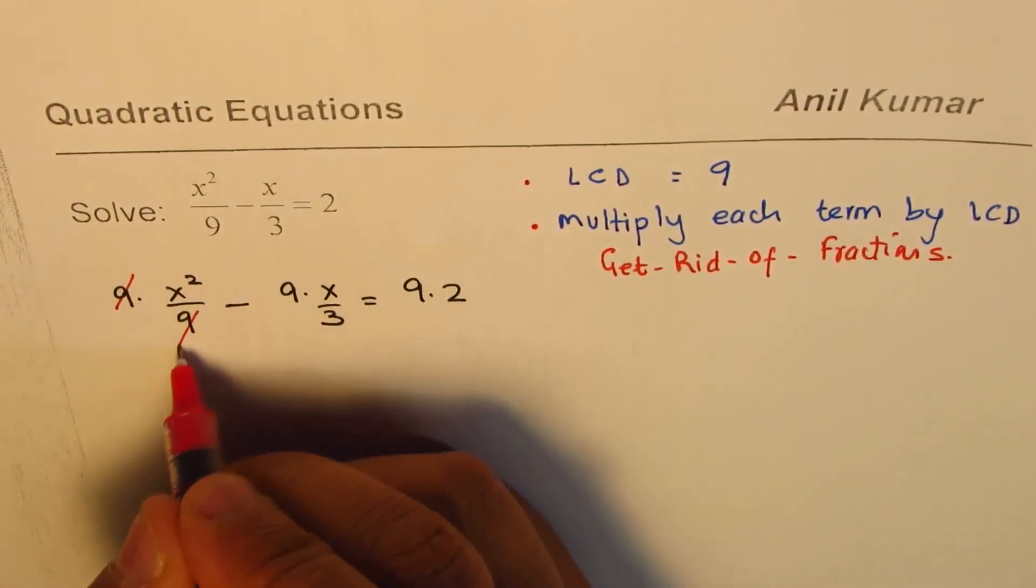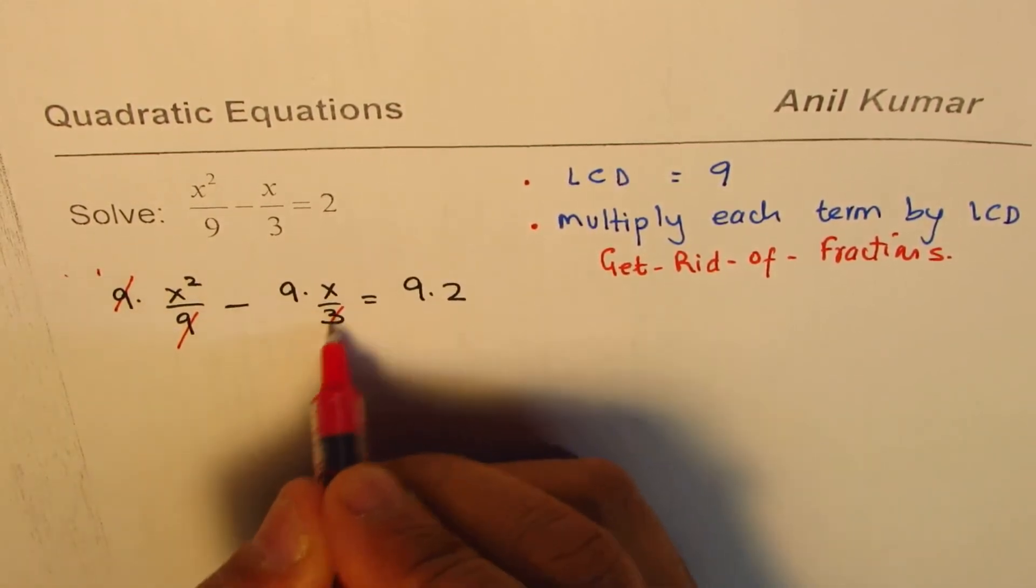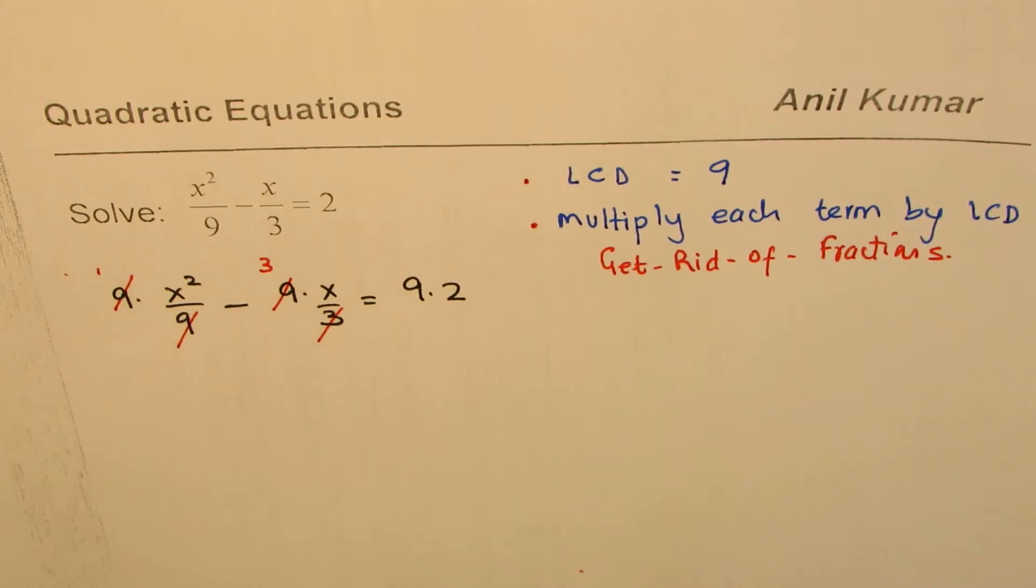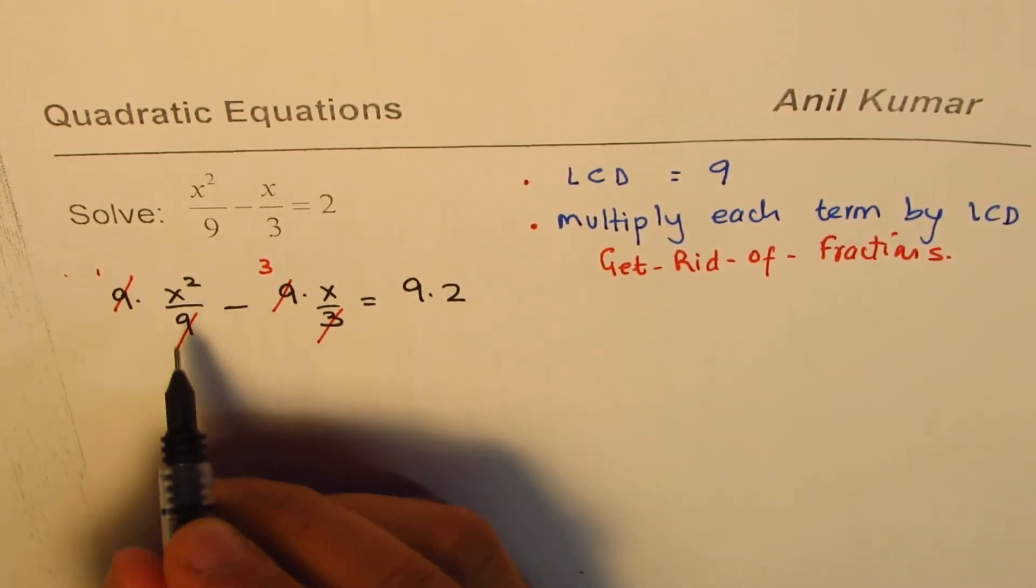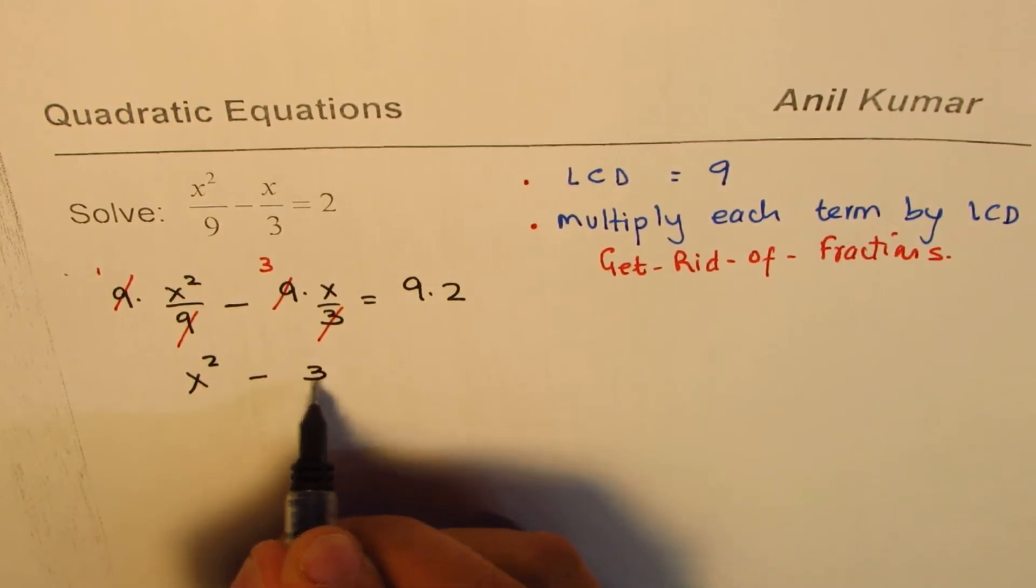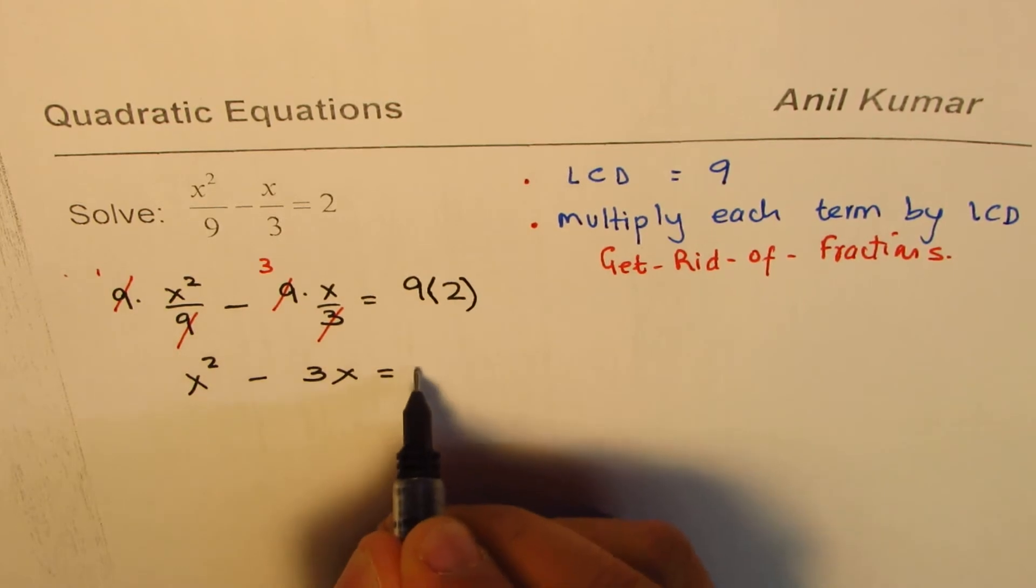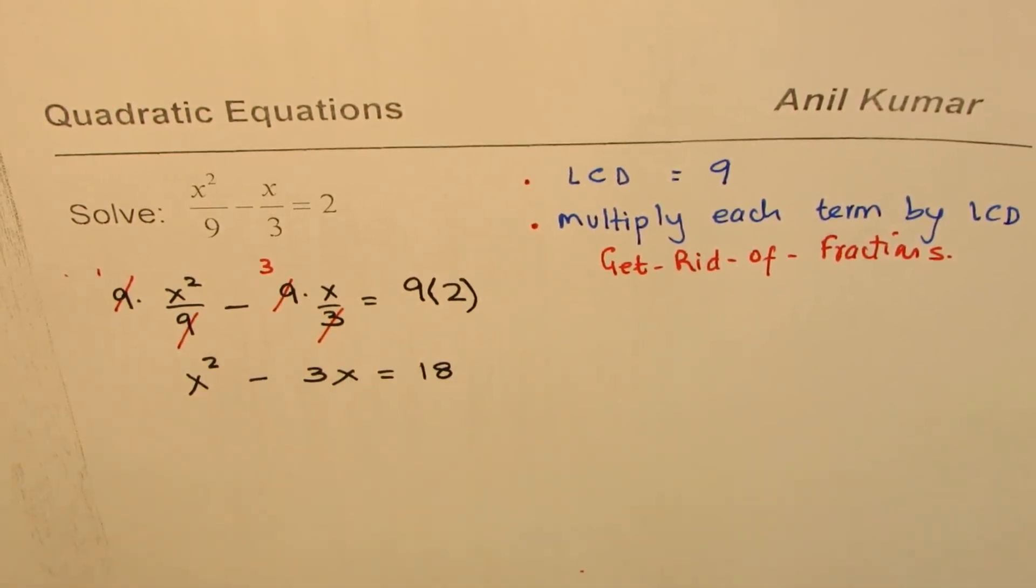Now 9 and 9, when you divide, you get 1. So 1 times x² is x². This when you divide, you get 3. So now you can write this equation as x² - 3x equals to 9 times 2, which is 18.